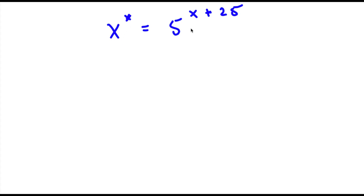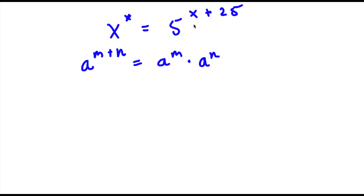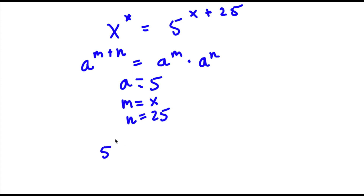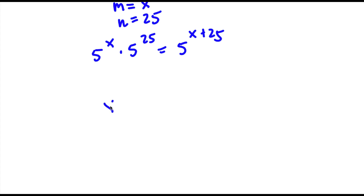Now for the bonus problem: x to the power of x is equal to 5 to the power of x plus 25. If I have something in the form a to the power of m plus n, this equals a to the power of m times a to the power of n. So 5 to the power of x plus 25 becomes 5 to the power of x times 5 to the power of 25. So now I have x to the power of x equals 5 to the power of x times 5 to the power of 25.